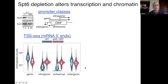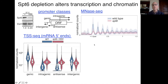After SPT6 depletion, intragenic, antisense, and intergenic promoters are now at roughly the same level as genic — we see a drastic change with thousands of intragenic and antisense promoters activated that were not activated before. We also looked at chromatin structure by MNase-seq. In wild type we see exactly what we'd expect with well-positioned nucleosomes +1, +2, +3, and so on.